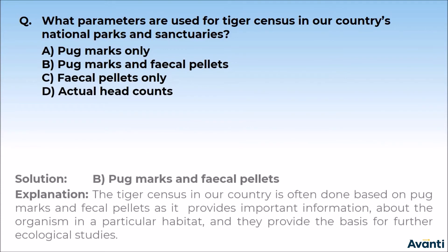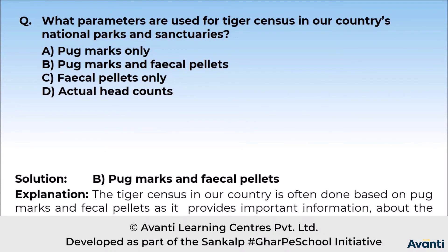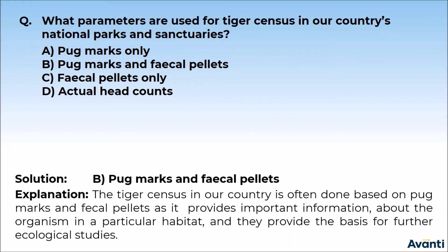The right answer is Option B: Pug marks and fecal pellets. The tiger census in our country is often done based on pug marks and fecal pellets, as it provides important information about the organism in a particular habitat and provides the basis for further ecological studies.